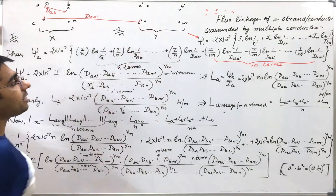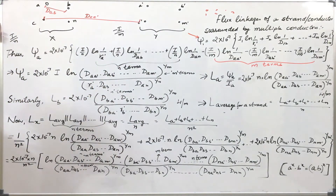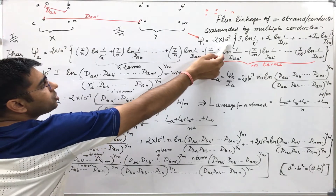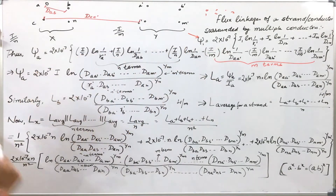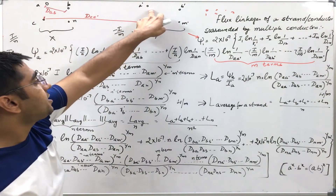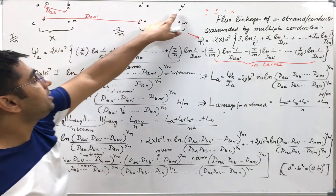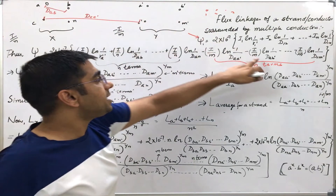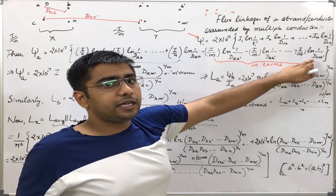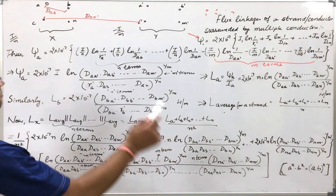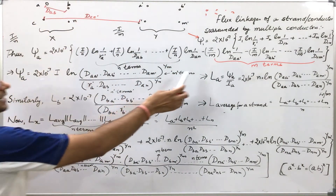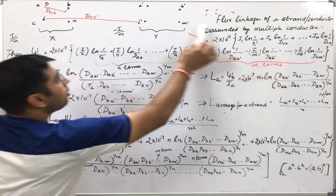Now coming to the strands of conductor Y — what flux linkages will they create? Every strand is carrying current minus I by M. So I will write the distance between strand A and strand A dash as D_AA', and for strand B dash it will be D_AB'. Similarly I will write M terms, up to the M dash strand. So first we have N terms for the strands of conductor X, and next we have M terms for conductor Y.